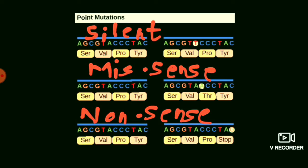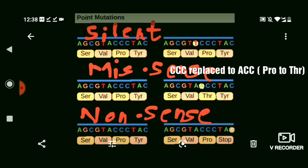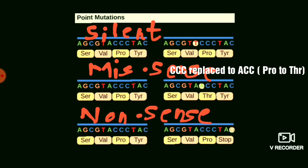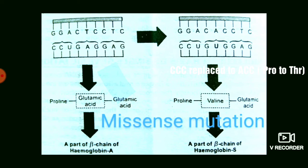As you can see in this picture, the codon for proline is CCC. When there is a substitution — the first C is replaced by A — it becomes ACC, which codes for threonine. So the entire amino acid is changed, leading to a drastic or lethal phenotypic effect.